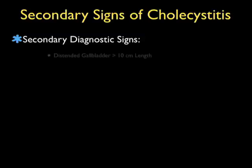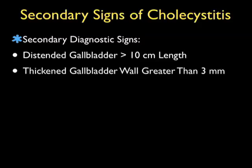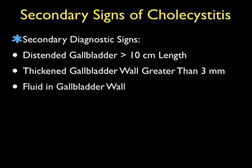There are multiple secondary signs of cholecystitis that we should go through. These include a distended gallbladder greater than 10 cm in length, a thickened gallbladder wall that's usually mentioned as greater than 3 mm in width. Also, one may be able to see fluid in the gallbladder wall, or edema within the gallbladder wall, as shown by a stripe of fluid within the wall.